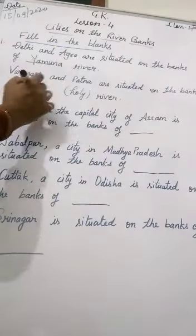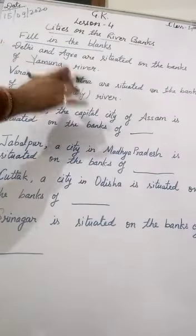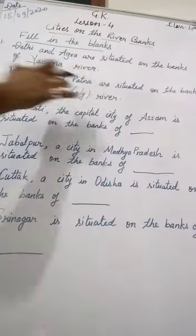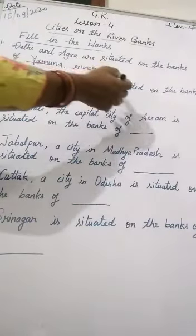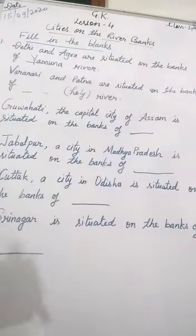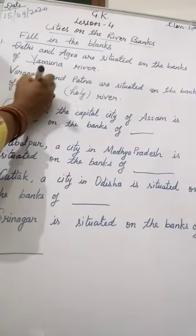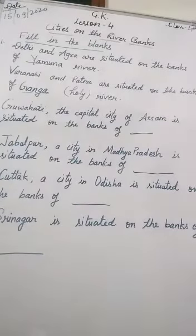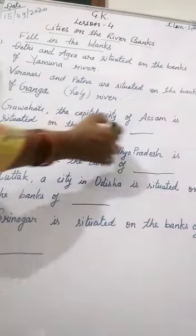Second one: Varanasi and Patna are situated on the banks of this river. See the third one — Guwahati, the capital city of Assam, is situated on the banks of this river.